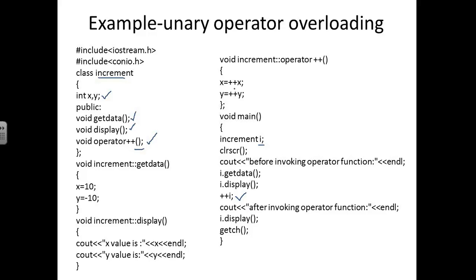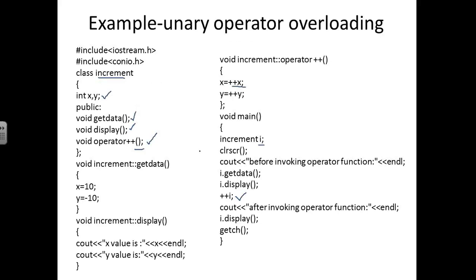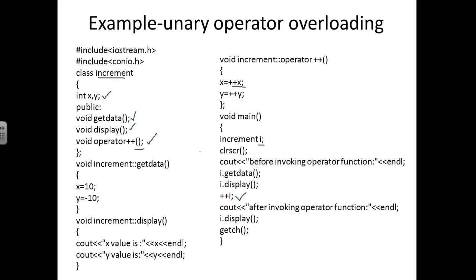The important thing to remember: unary operator overloading will have only one operand involved in the process. Now here is a task: write a C++ program for unary operator overloading to perform a decrement operation. Here I have done an increment operation, so instead I want you to do it for decrement.